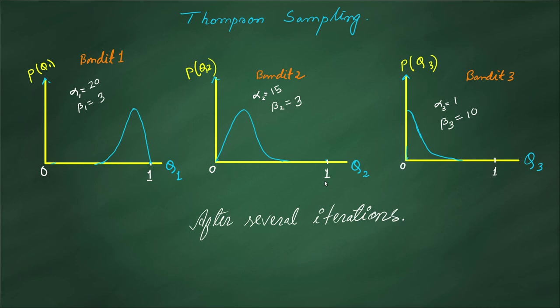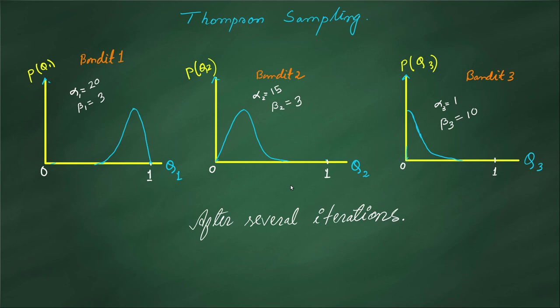If we proceed like this for several iterations, our distributions become sharper and sharper and move closer and closer to the actual Q values of the machines. After sufficient updates, sampling from these distributions makes it more likely that we get higher values from the bandit which actually has a higher Q value. We'll play most of the time on the best bandit because we'll most often sample the highest value from it.